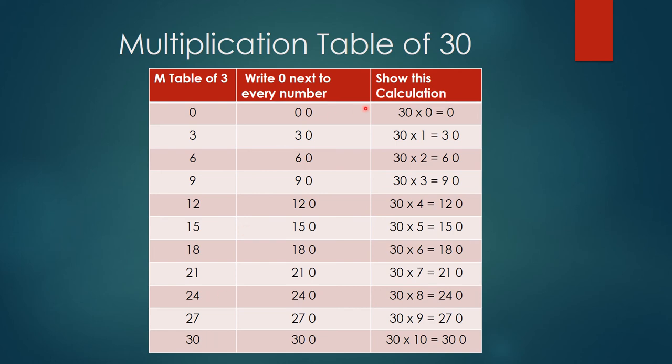Similarly, the same way we did last time, you just write 0 in front of all the numbers we derived. So you get tables of 30.